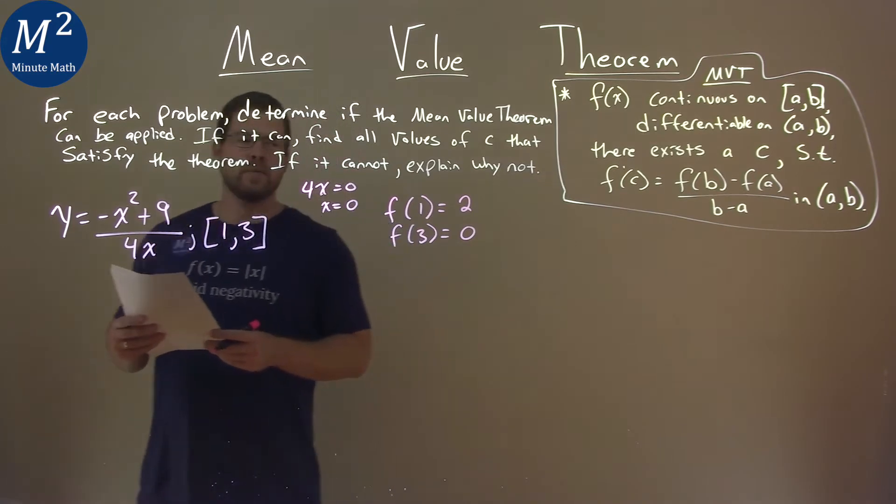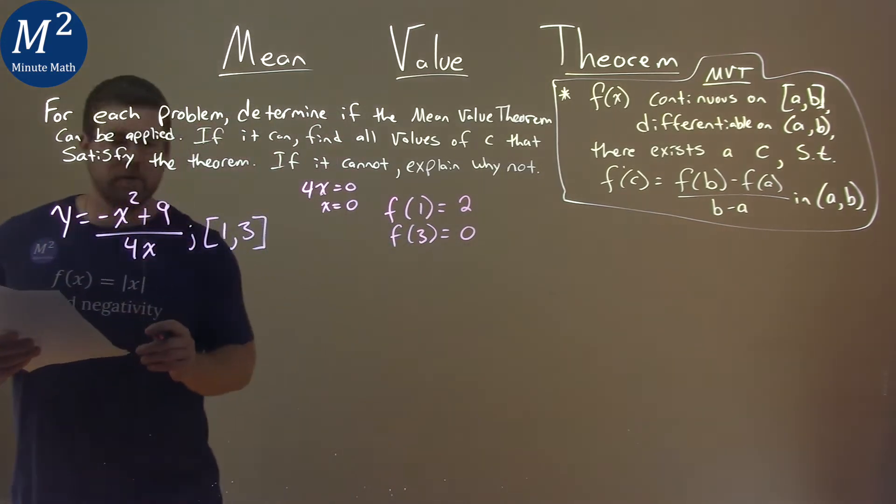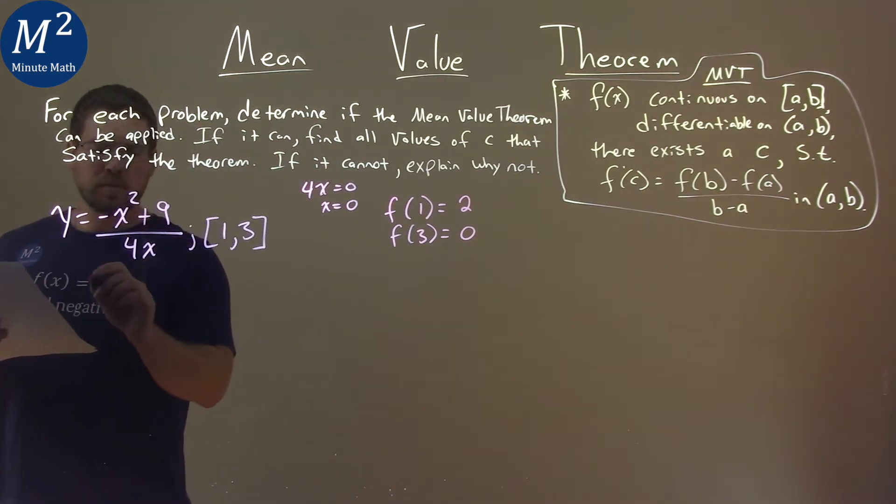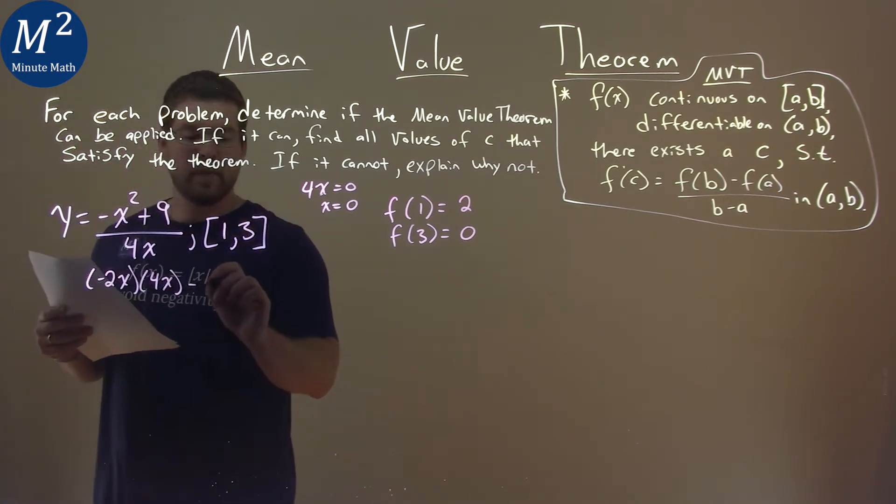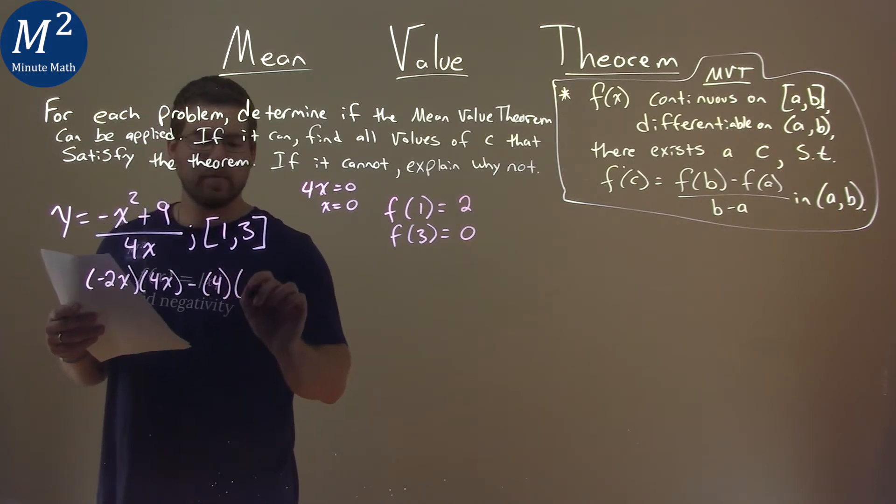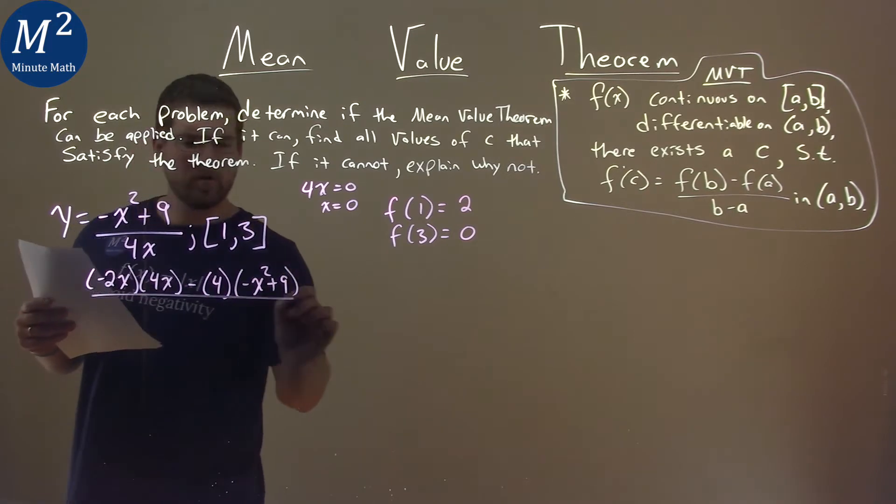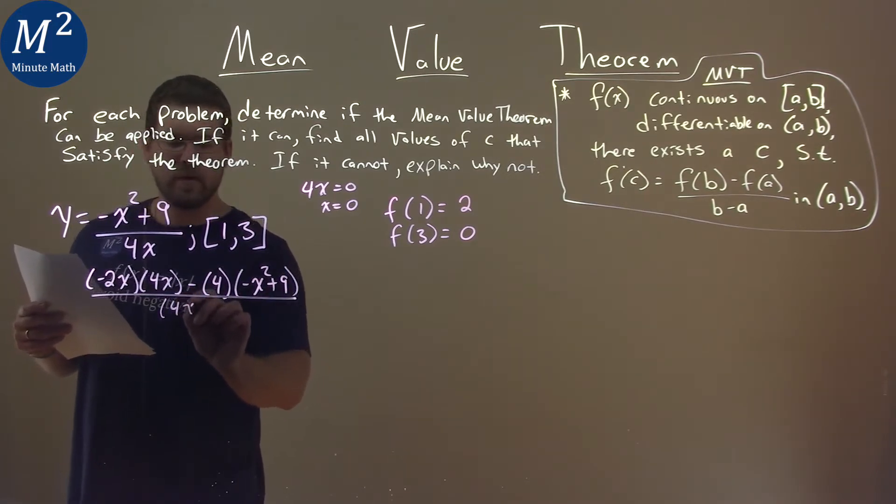So now the mean value theorem states that we need to take the derivative of our function. Using the quotient rule, derivative of the numerator is negative 2x times the denominator, 4x, minus the derivative of the denominator, which is 4, times the numerator, negative x squared plus 9, all over our denominator, 4x squared.